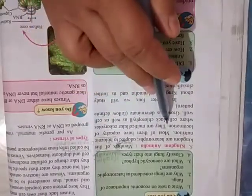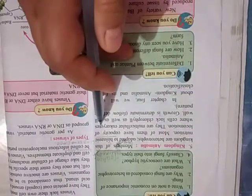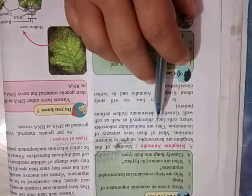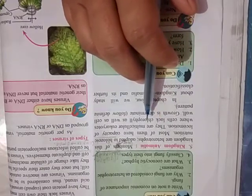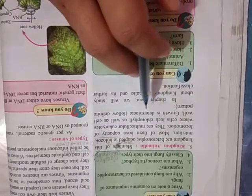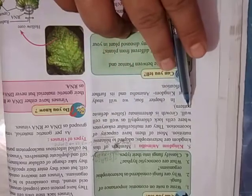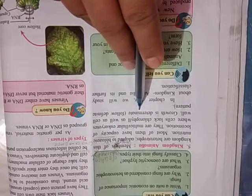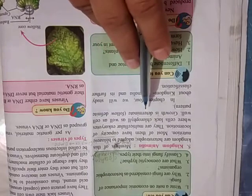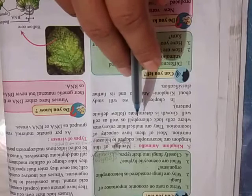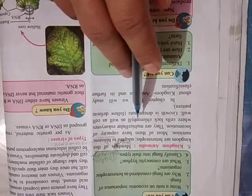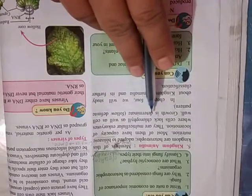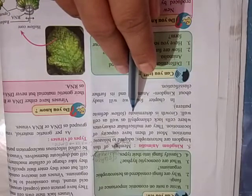Most of them have the capacity of locomotion. They are multicellular eukaryotes where the cell lacks chlorophyll as well as cell wall. They have a cell wall made up of cellulose. Multicellular organisms or eukaryotes don't have chlorophyll as well as cell wall. Growth is determined. These are certain characteristics of Animalia.